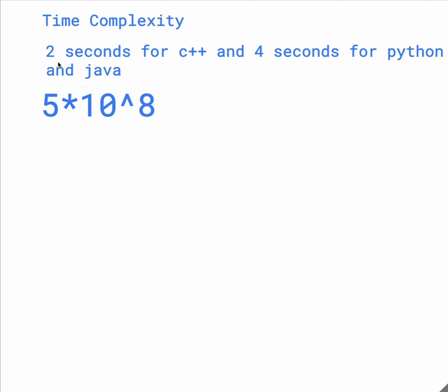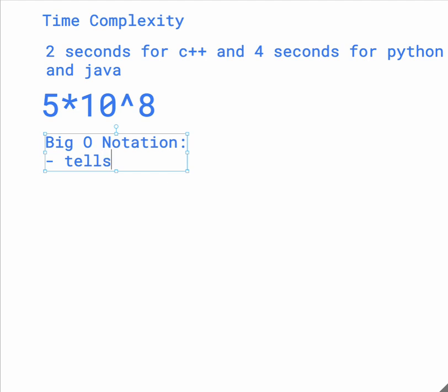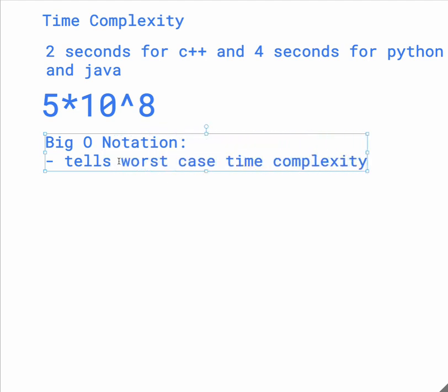To start off with the basics of time complexity, we use something called Big O notation. Basically, Big O notation tells us what the time complexity is in the worst case, and it ignores constant factors.